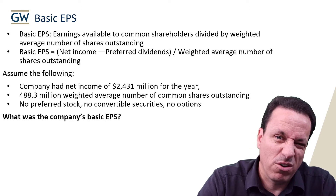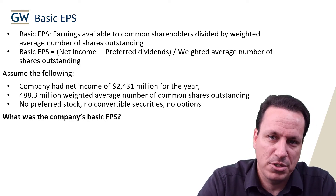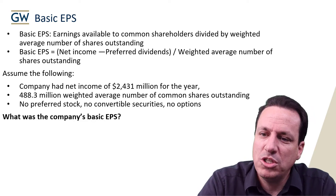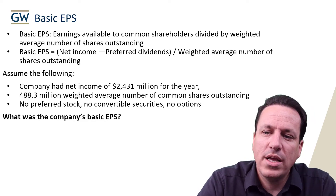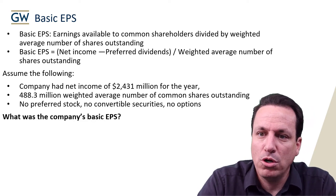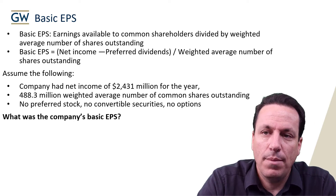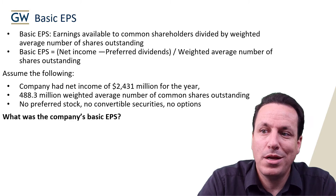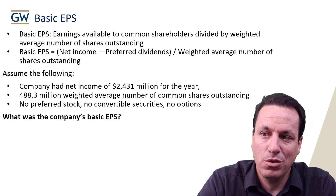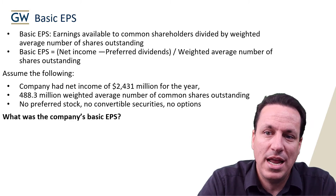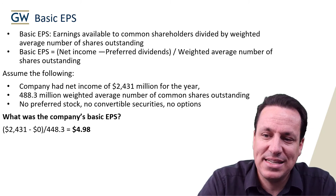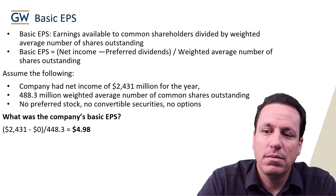When we say no options, that refers to stock options — you always have some options in life, but here we mean stock options. So, what is the company's basic earnings per share? Based on the formula, this is not too hard — we just plug and chug. We put $2,431 million over $488.3 million, and what we get is $4.98 per share.